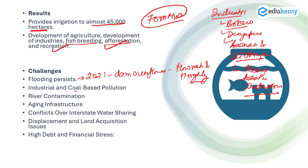Another issue is coal-based pollution. As many heavy industries are located in Durgapur and Bokaro, they are leading to air and water pollution. Cities like Asansol and Dhanbad continue to be reported as cities with high levels of air pollution.